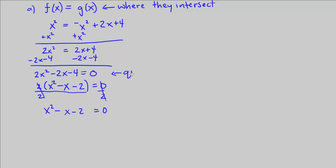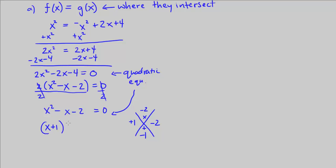I could stop here and use the quadratic formula on this equation, but I want to factor. I'm looking for two numbers that multiply to get negative 2 and add to get negative 1. Those numbers are negative 2 and positive 1, because negative 2 times positive 1 is negative 2, and negative 2 plus positive 1 is negative 1. So that allows me to factor this as x plus 1, times x minus 2.